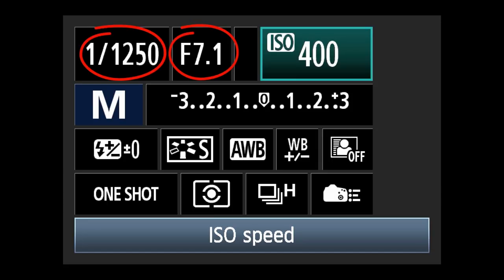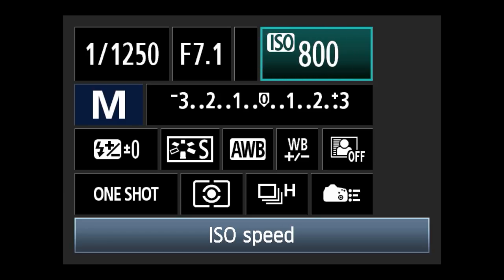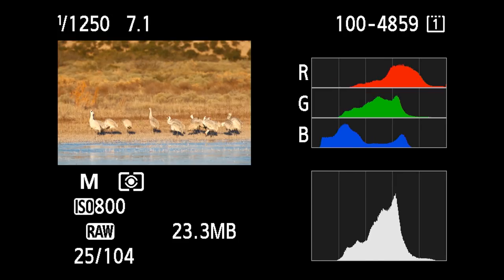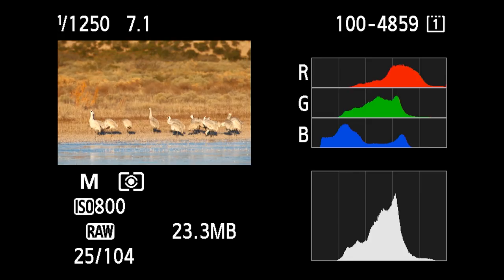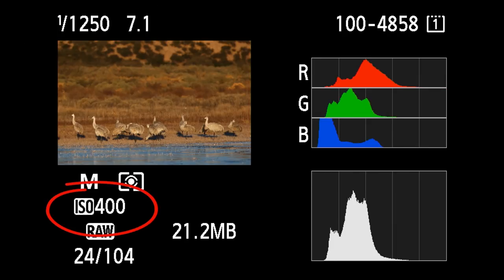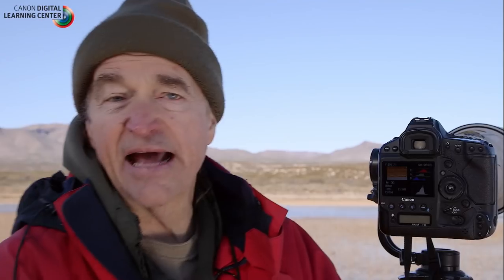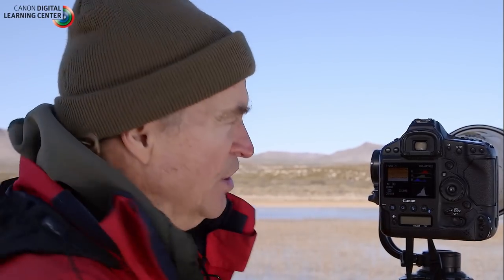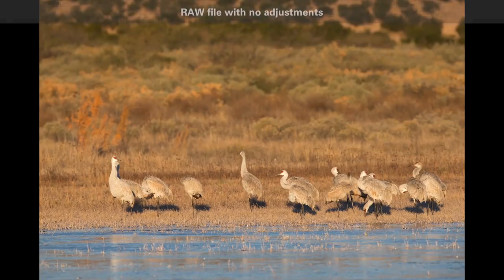The one we sometimes forget about is ISO — you can use changes in ISO to get to the right exposure. When I was shooting at 1/1250th at f/7.1 and wanted to move the histogram to the right, I stayed at 1/1250th of a second at f/7.1 but went from ISO 400 to ISO 800. That gave me a full stop more of exposure, moved my histogram beautifully to the right, and gave a good, quality image file.